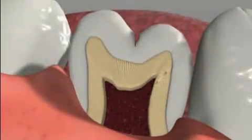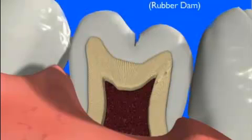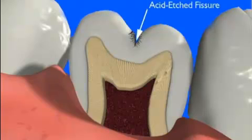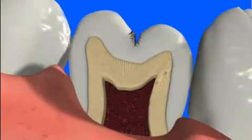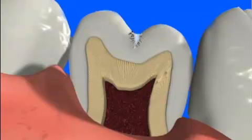Following thorough plaque removal from the pits and fissures, the tooth is isolated from all mouth moisture, and the grooves are etched with a mild acid solution. This produces a microscopically roughened surface into which the sealants will adhere. The sealant is then applied to the grooves as a viscous liquid, which hardens on its own or by exposure to a blue light. Once placed, the sealant prevents bulk plaque from being able to accumulate in the pits and fissures.